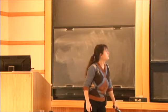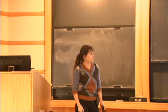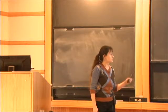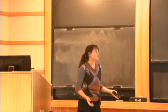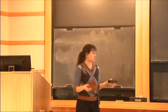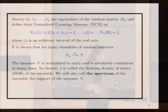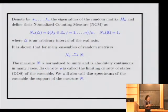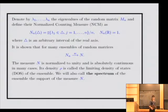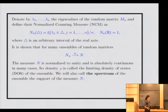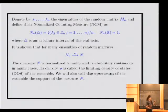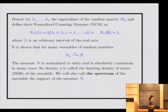Define the normalized counting measure as you can see in this formula. That is, we take an arbitrary interval delta, take the number of eigenvalues that lie in delta, and divide by n. The global regime of random matrix theory, centered around the behavior of this measure, is well studied for many ensembles of random matrices.